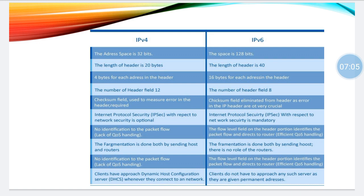In IPv4, 4 bytes are reserved for each address in the header; in IPv6, 16 bytes are reserved per address. The number of header fields is 12 in IPv4 and 8 in IPv6. Checksum field is used to measure error in the header in IPv4, but it has been eliminated in IPv6. IPSec — Internet Protocol Security — is optional in IPv4 but compulsory in IPv6. IPv4 lacks quality of service handling, while IPv6 handles QoS efficiently.